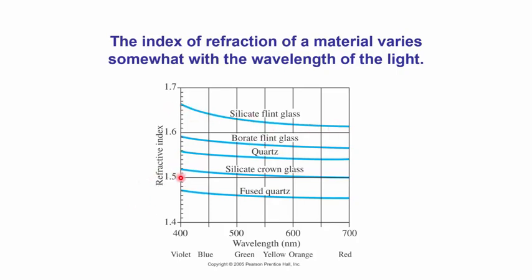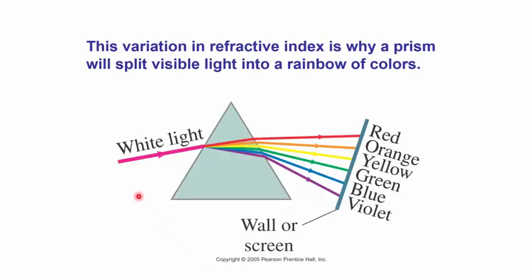But what that does is it allows us to do things like prisms. So you guys have probably seen these before as well. You pass light through a prism and you end up getting a pretty rainbow.